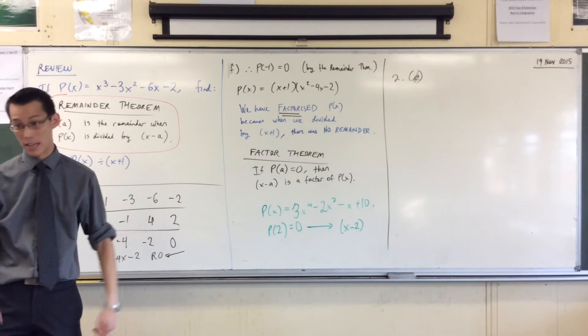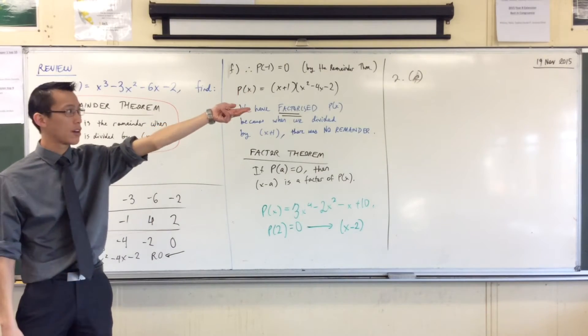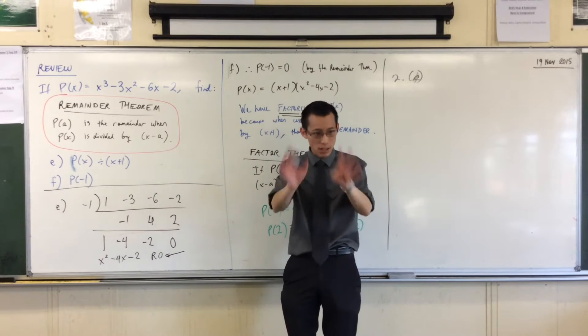Cubics are hard. Quartics are even harder. Quintics are impossible. So I'm deliberately choosing a cubic because if you look at part A, you don't need any fancy stuff here to factorize that. That's a quadratic. You can deal with that.